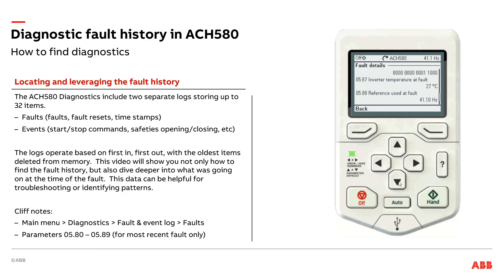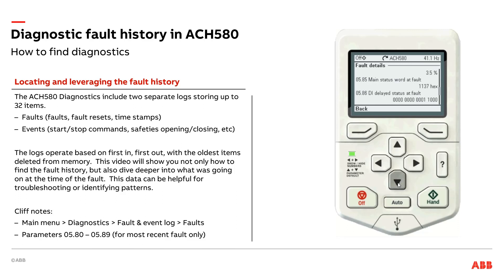We've got our speed reference — this is how fast we're being told to run at the time of fault. We were being told to run at 41.1 Hertz, and as we looked at earlier, we were at 41.09 Hertz — basically at set point. And lastly, I can see the HVAC status word at fault. I've got a bunch of zeros and ones here, reading right to left. Sometimes I feel like I'm Neo in the Matrix reading all the ones and zeros coming down the screen.